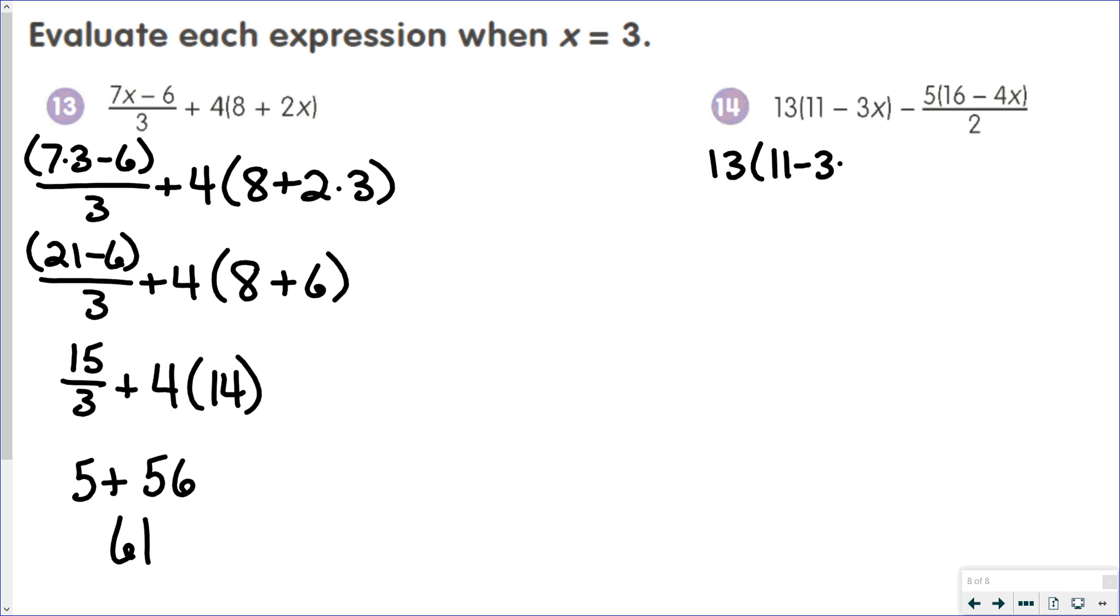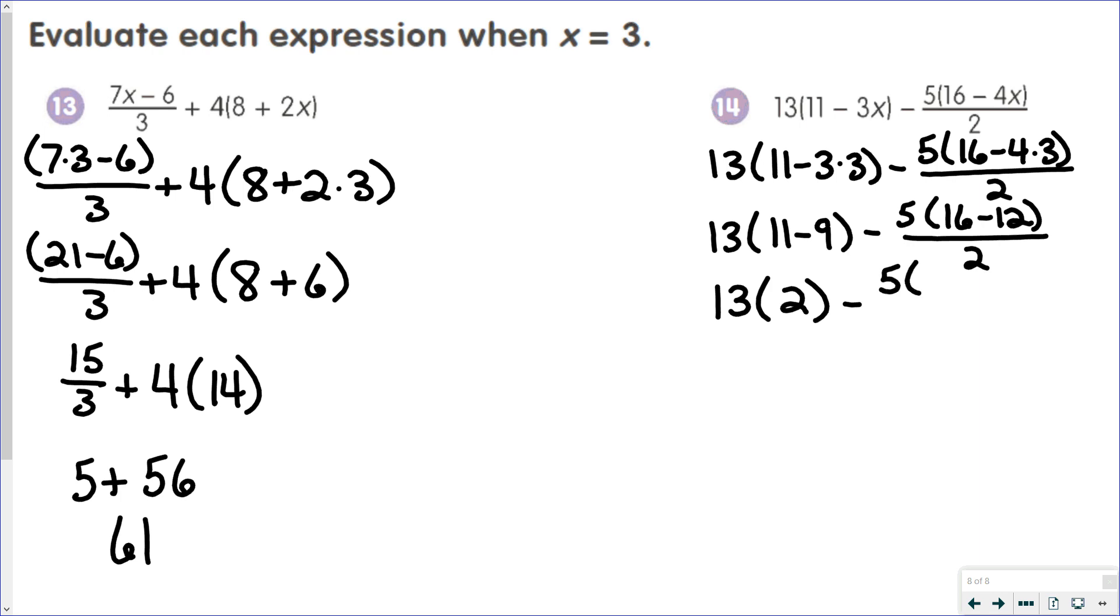Again, a lot of this is just rewriting. The calculations aren't too difficult. It's just that you're going to find yourself writing the same thing over and over again, but that's okay. So 3 times 3 is 9. 4 times 3 is 12. 13 times 11 minus 9 is 2. 16 minus 12 is 4. 13 times 2 is 26. 5 times 4 is 20. 20 over 2 is 10. 26 minus 10 is 16.